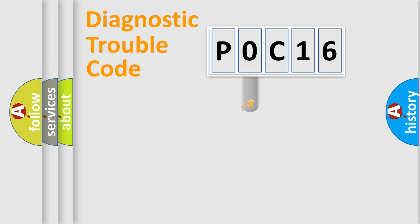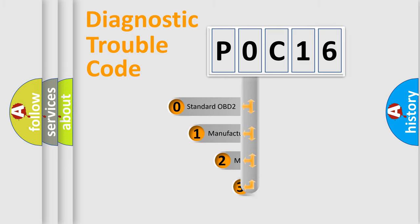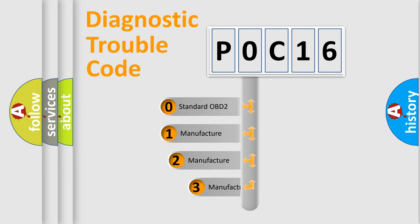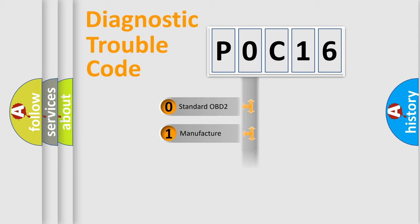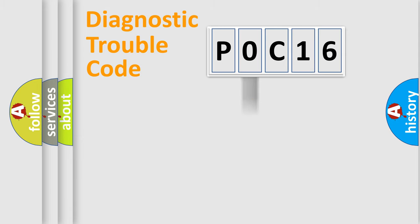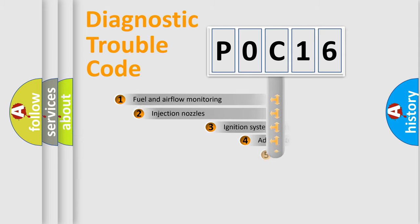This distribution is defined in the first character of the code. If the second character is expressed as zero, it is a standardized error. In the case of numbers 1, 2, or 3, it is a more specific expression of a car-specific error.